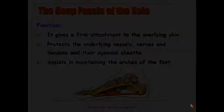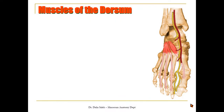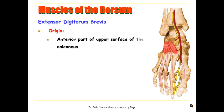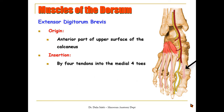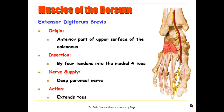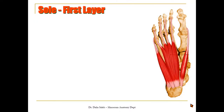There is one muscle at the dorsum of the foot: the extensor digitorum brevis. It arises from the upper surface of the calcaneus and splits into four tendons for the medial four toes. The part inserted into the big toe is called extensor hallucis brevis. It takes its nerve supply from the deep peroneal nerve and extends the toes regardless of the position of the ankle.